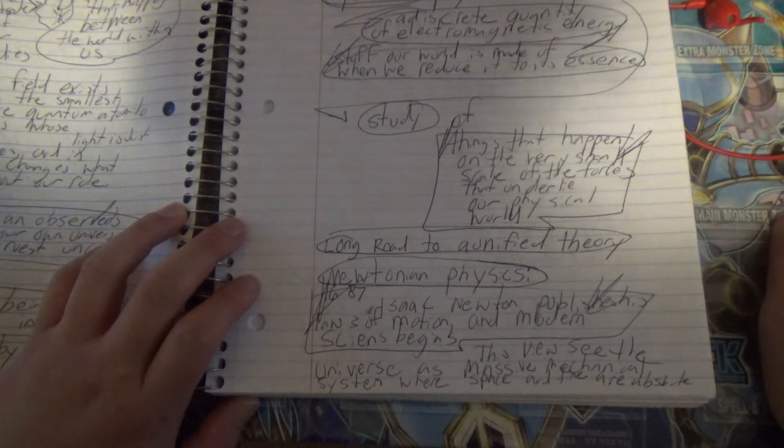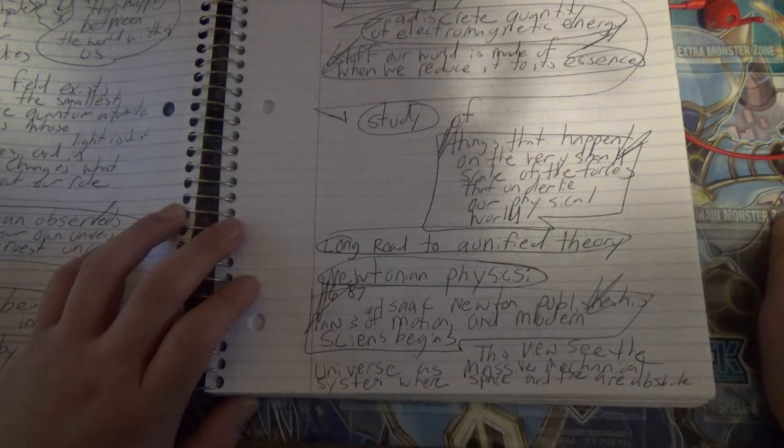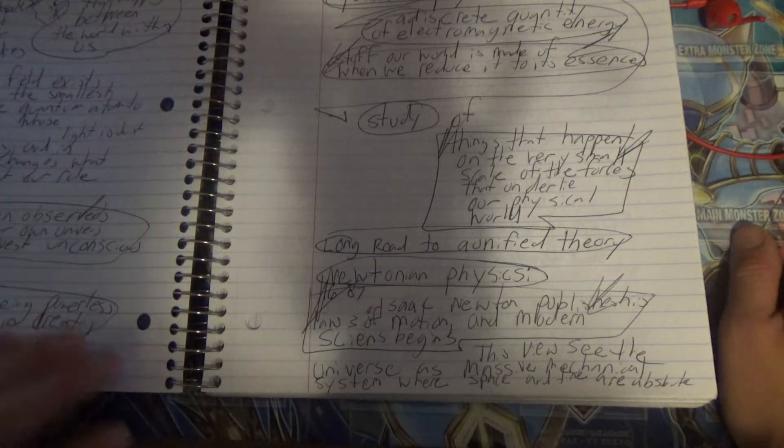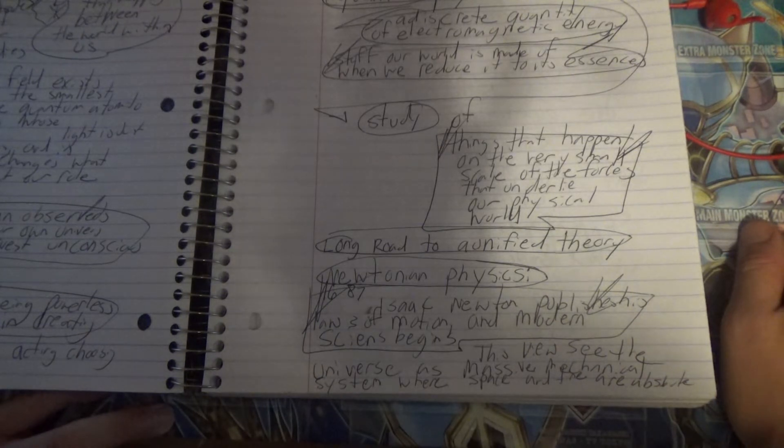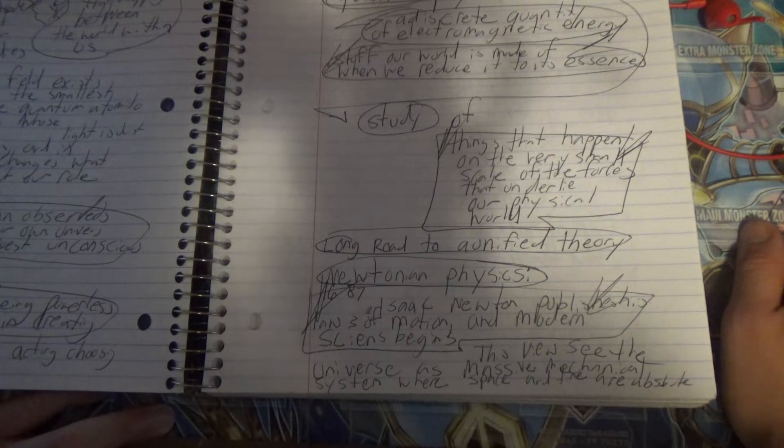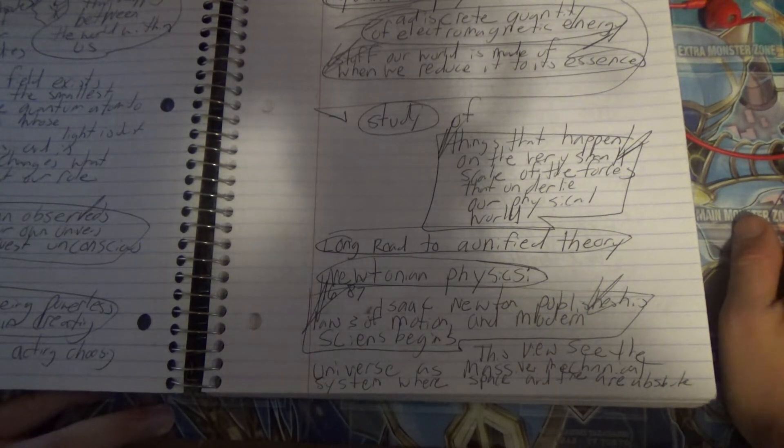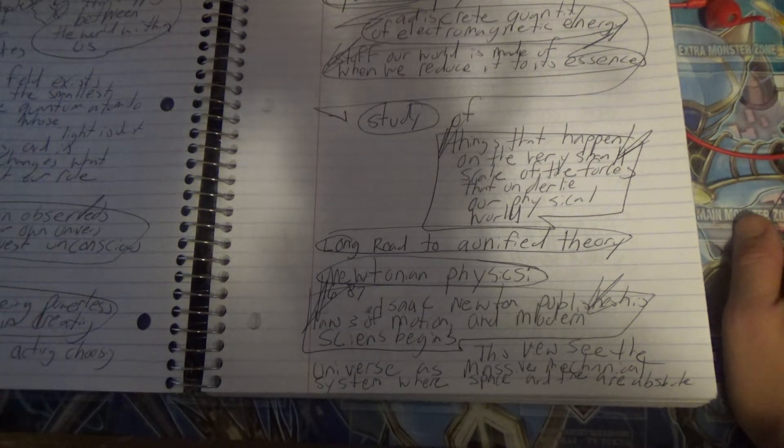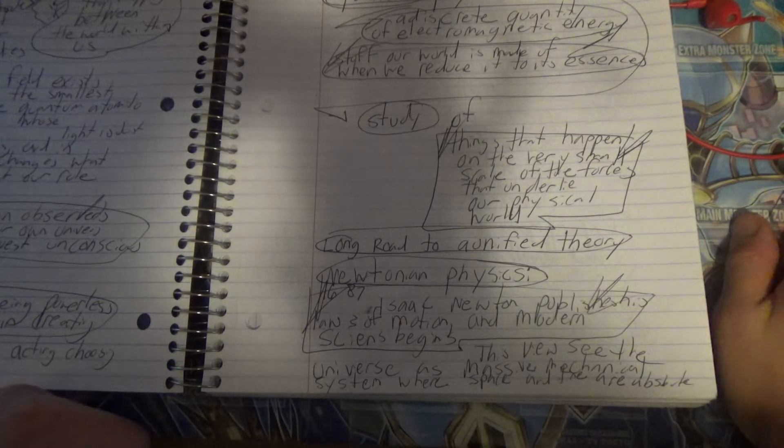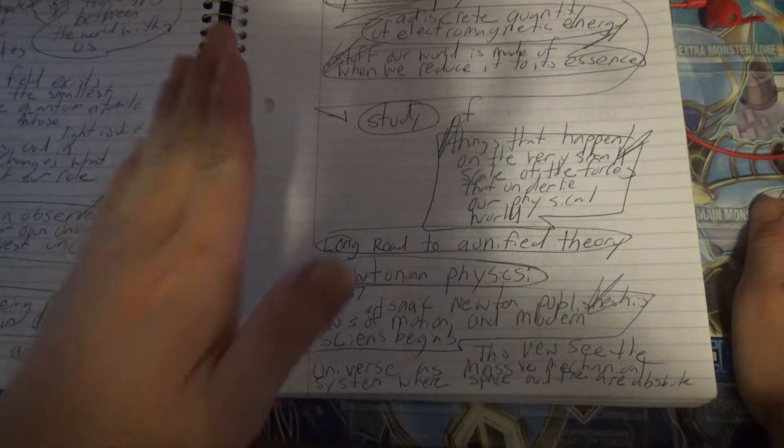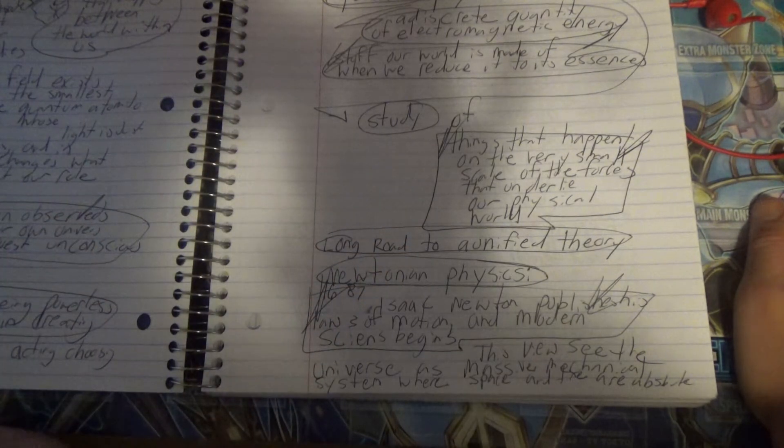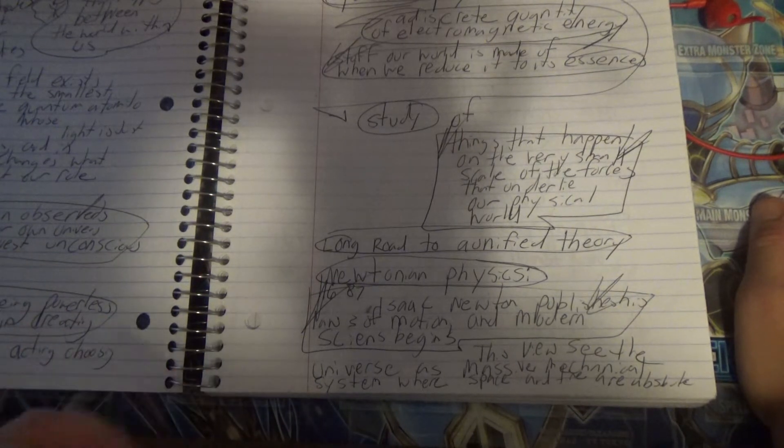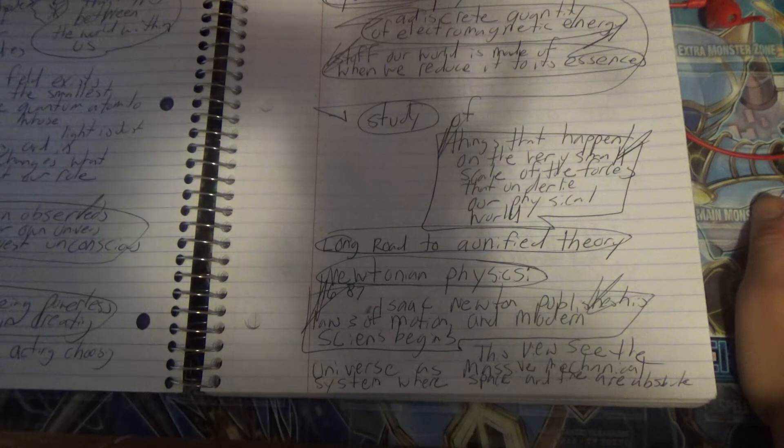This is from the book Divine Matrix by Greg Braden. This field of energy provides the container and reflects that it exists in everything from the smallest particle of quantum atoms to distant galaxies. It changes what we've believed about our role in creation. We're more than observers; we're creators of our own universe, mirrors of our truest unconscious beliefs. Instead of being powerless, we can participate in creating our own life just by choosing the life we want.